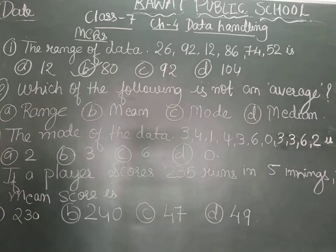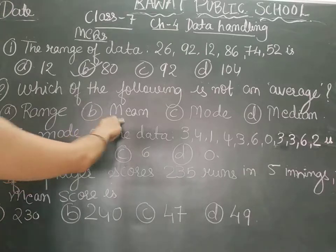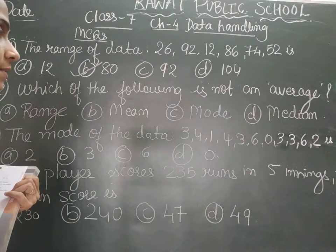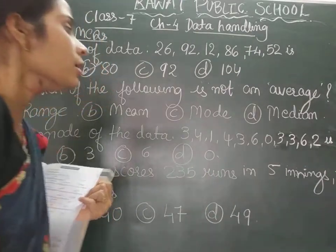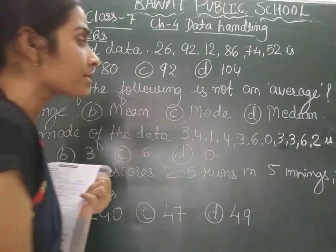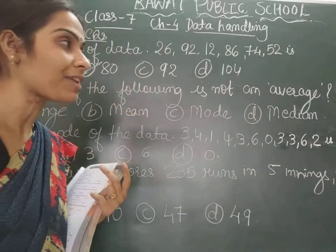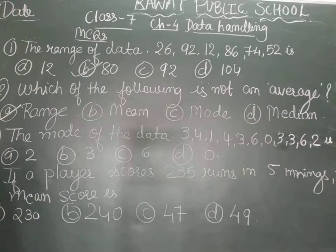The second question is: which of the following is not an average? Mean is an average because you are taking the sum of all the observations divided by the total number of observations. Mode is also telling the observation which is repeated many times, making it an average result. Median is also considered the average of the observations. So, the range is not an average among them.